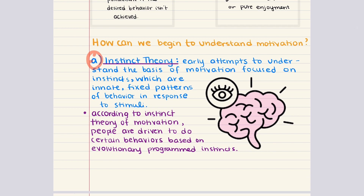Early attempts to understand motivation focused on instincts, which are innate fixed patterns of behavior in response to stimuli. According to instinct theory, people are driven to do certain behaviors based on evolutionarily programmed instincts. This theory was one of the first to describe motivation and was derived from Darwin's theory of evolution. William James, the father of modern psychology, was one of the first to write about human instincts in his 1890 publication, Principles of Psychology.